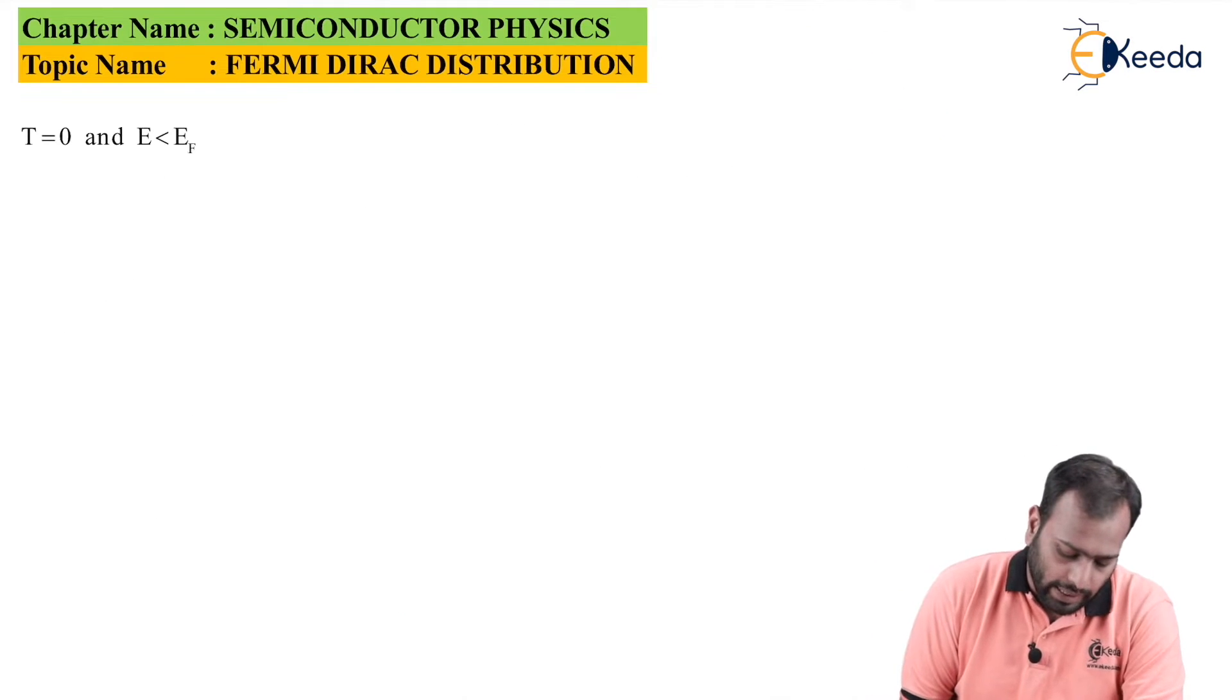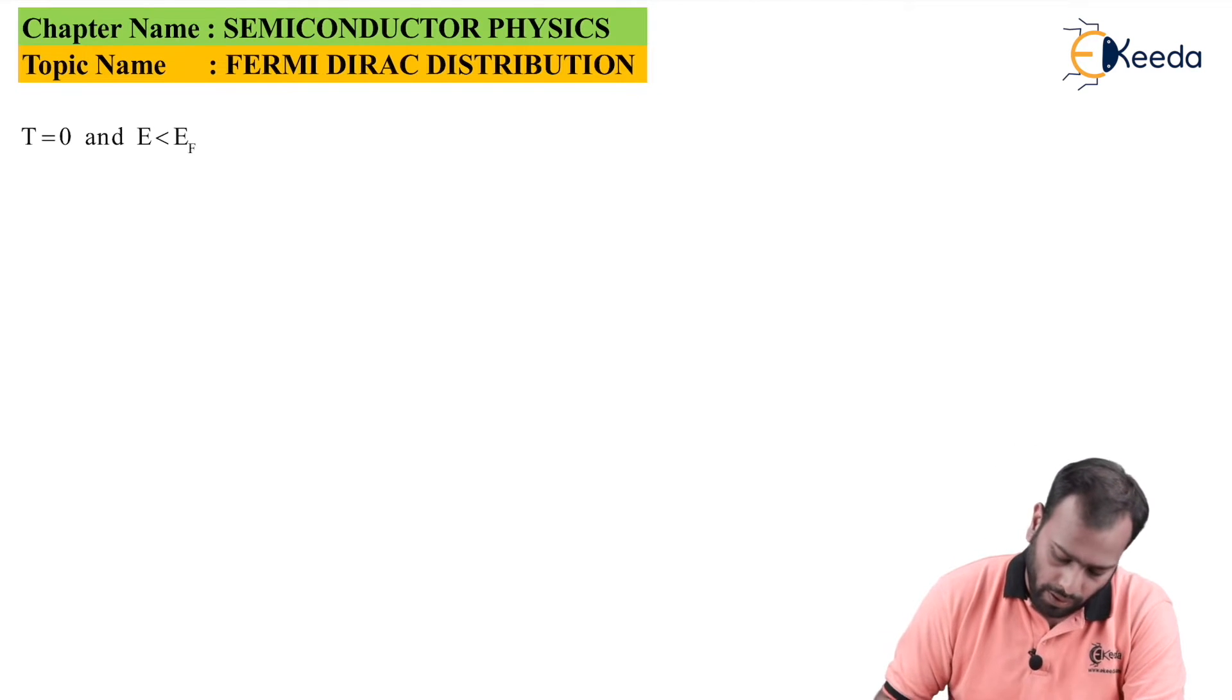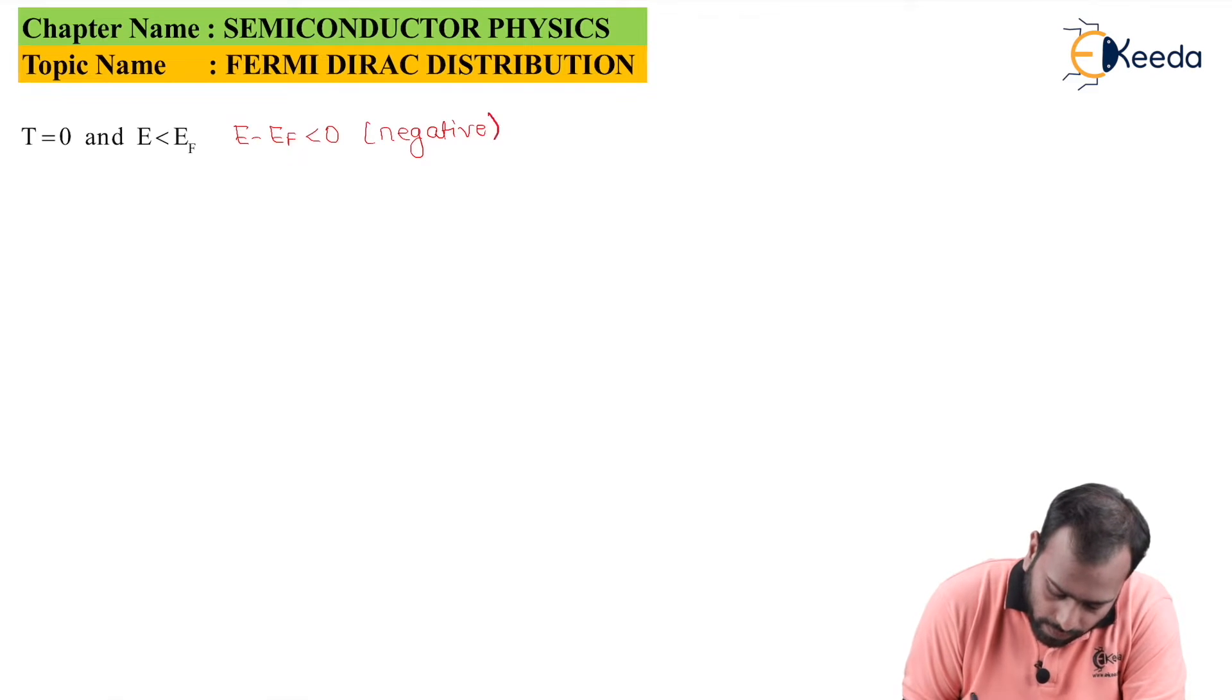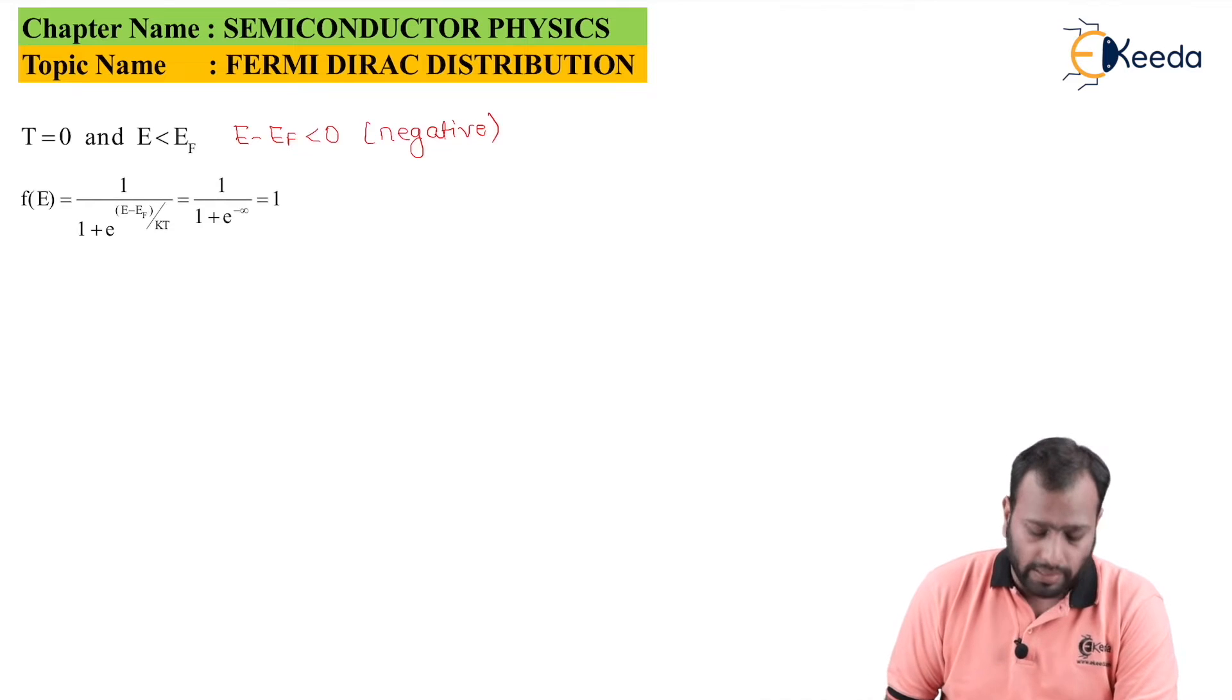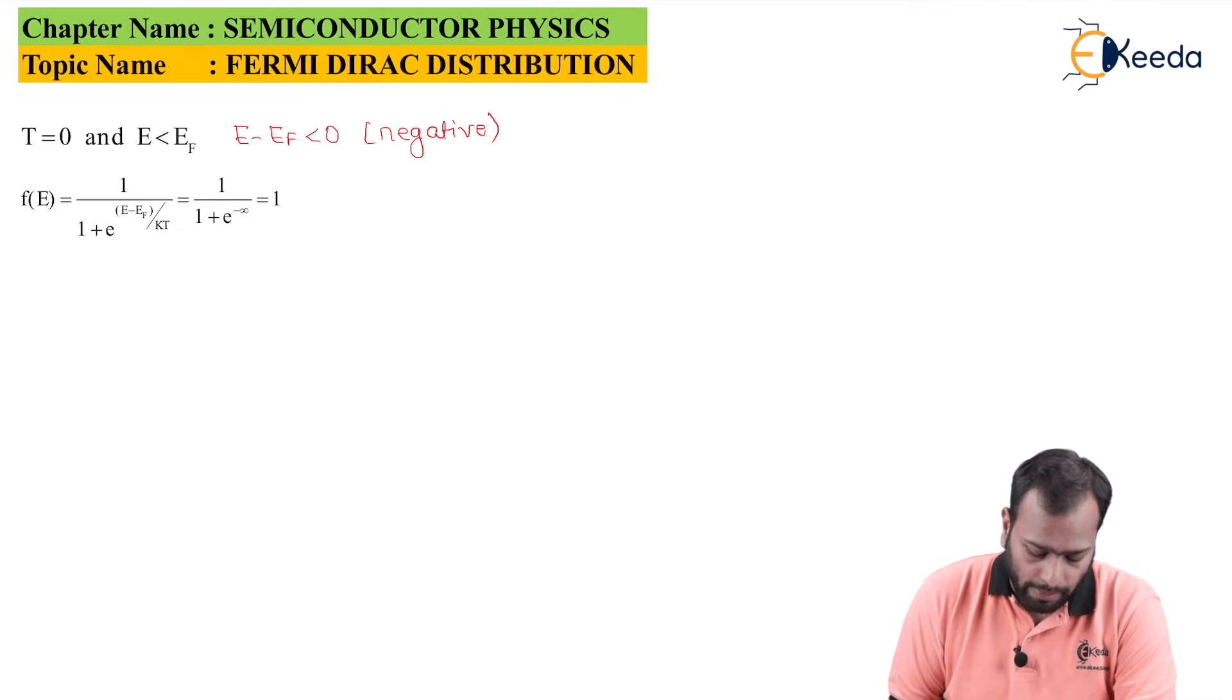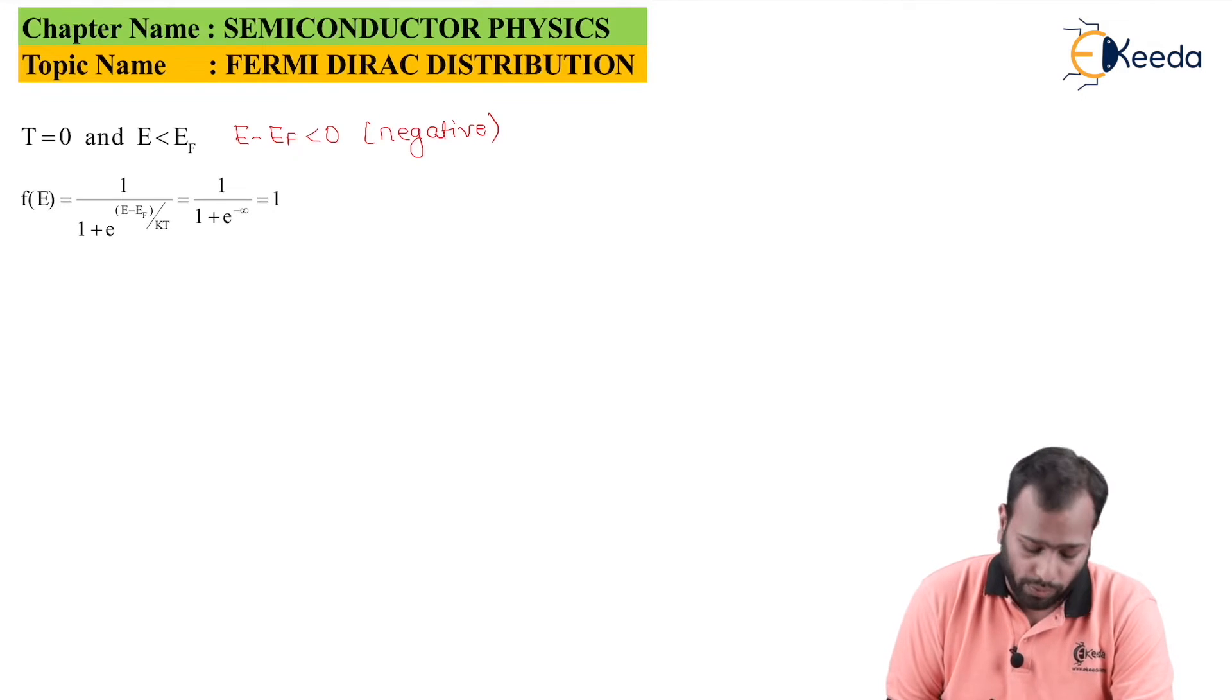Now, let's take a case where T is equal to 0 and E is less than EF. If E is less than EF, I can say E minus EF is less than 0, or I can say it is a negative quantity. Now, considering that equation, F(E) is equal to 1 upon 1 plus e times E minus EF upon KT. I get the value of E minus EF as minus, and since T is 0, I get the value as minus infinity.